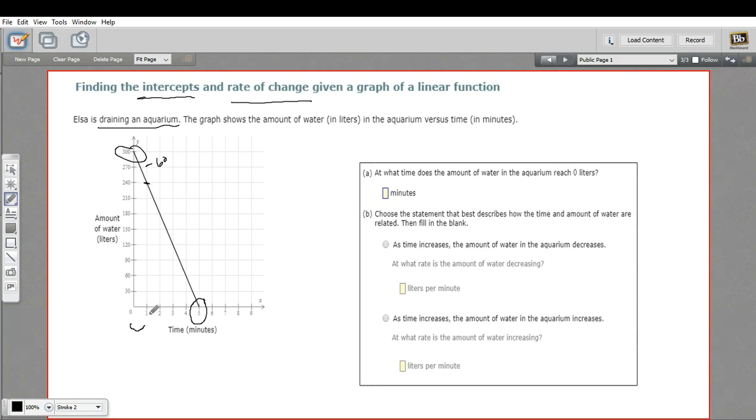Let's do it between one and two. So at 240, if it goes down another 60, it should be at 180. And it is. So it looks like it's going down at a steady rate of 60 liters per minute.